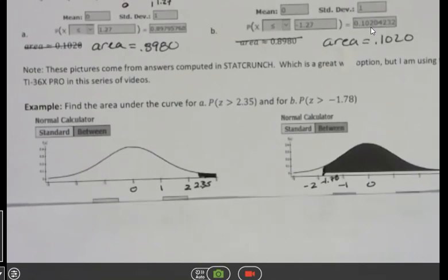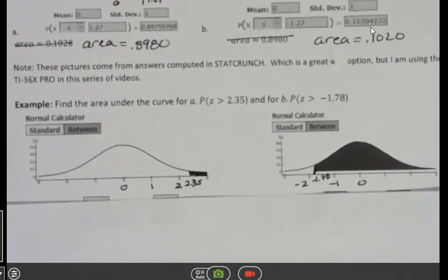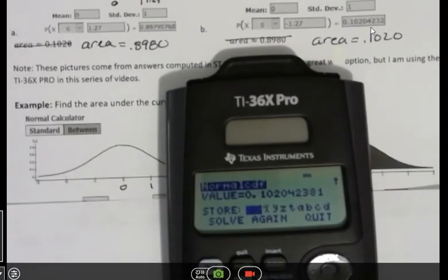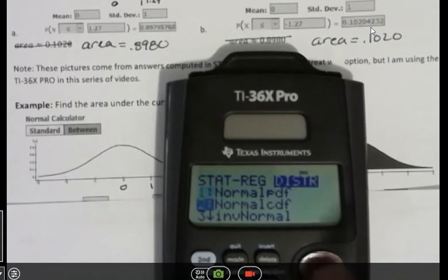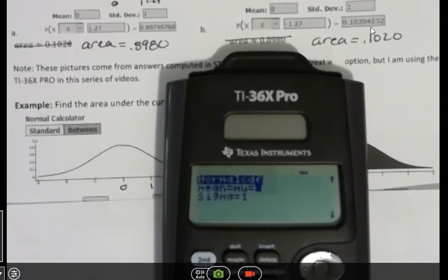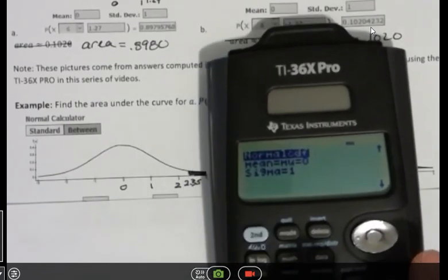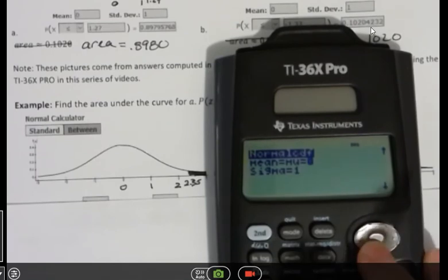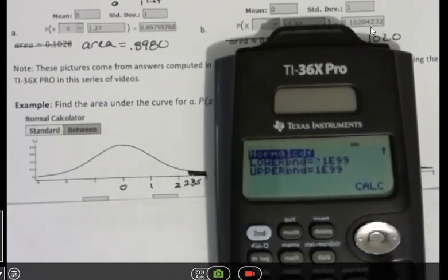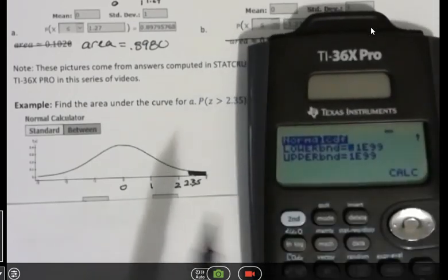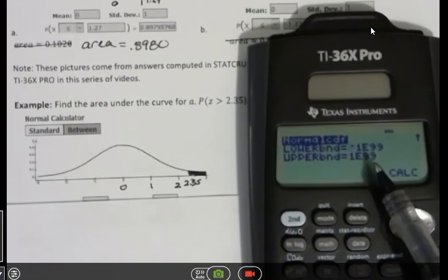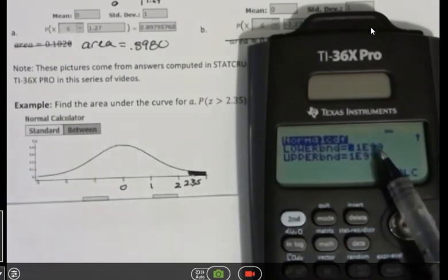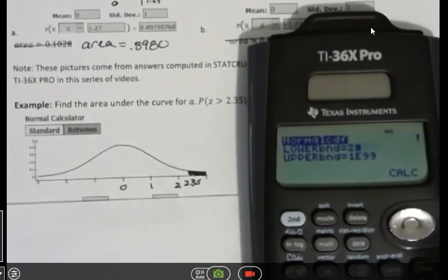So I can put that into my calculator the way I did the other ones. Second function data distribution down to normal CDF. I'm trying to add those up. And for the first one, I want 0 and 1. I like that for that. Now here, my graph is going to the right forever. So it's the 1E99 that I want to keep. And I want to put in my lower bound here of 2.35.